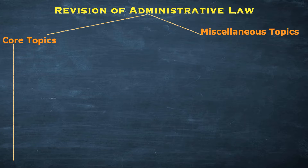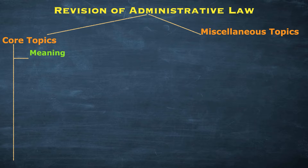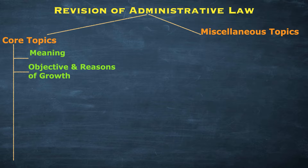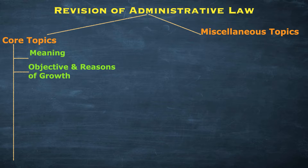The first core topic we discussed is the meaning of administrative law — what it is all about and what it does. Then we discussed the objectives and reasons for the growth of administrative law: what the objective is and what the reasons are because of which administrative law developed. Both terminologies were discussed in detail; if you don't remember, go back and watch the video again.